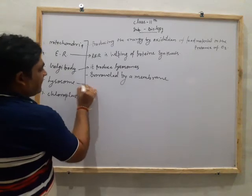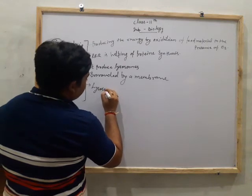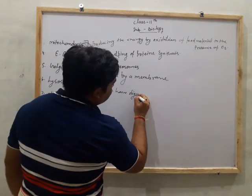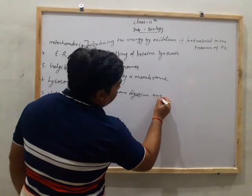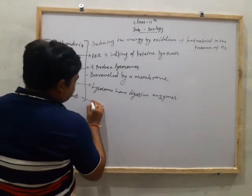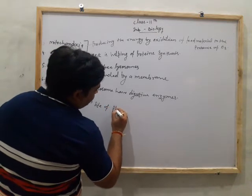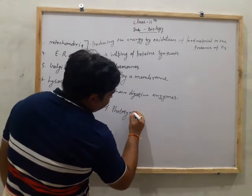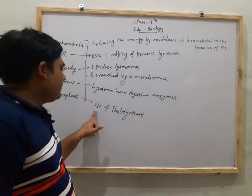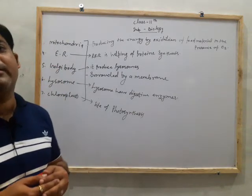The Golgi body produces lysosomes. What is the function of lysosomes? Lysosomes have digestive enzymes. And chloroplast is the site of photosynthesis — chloroplast is the organelle by which green plants prepare their own food through photosynthesis.